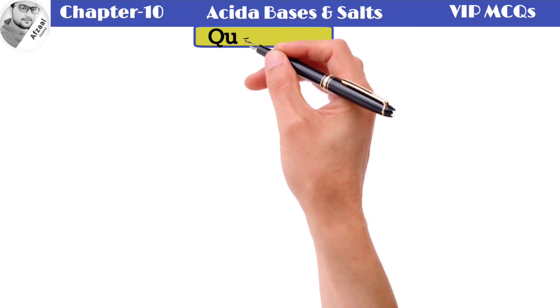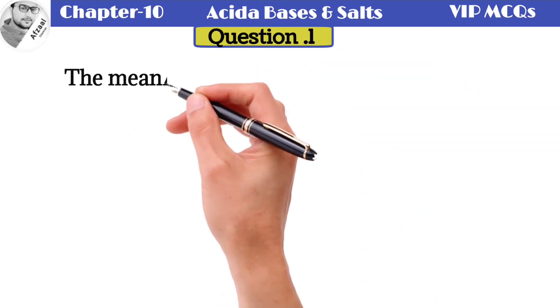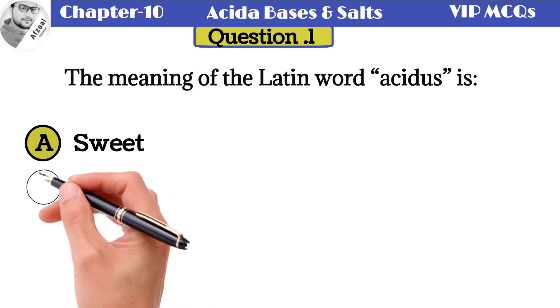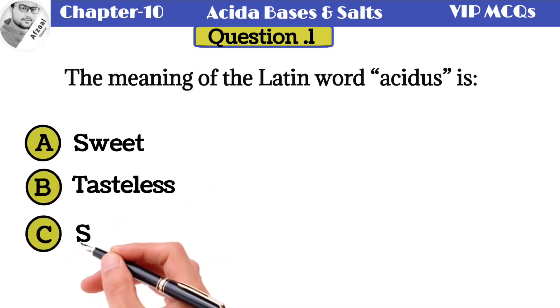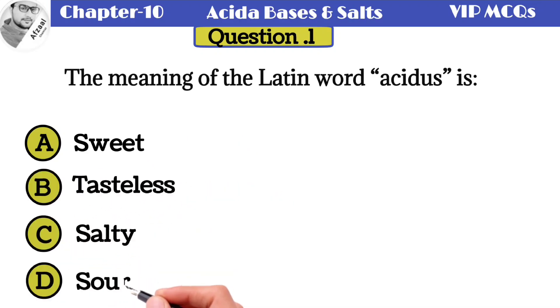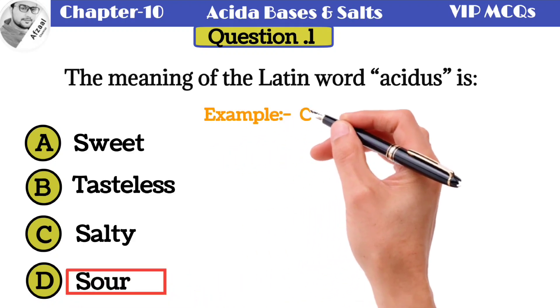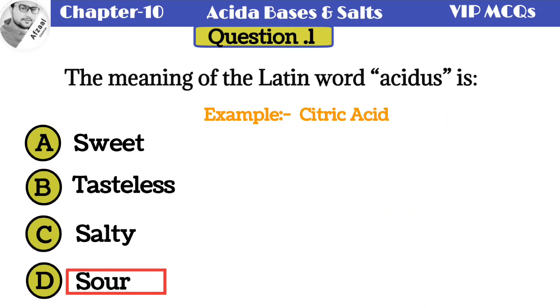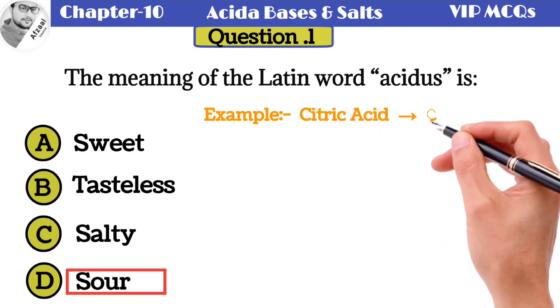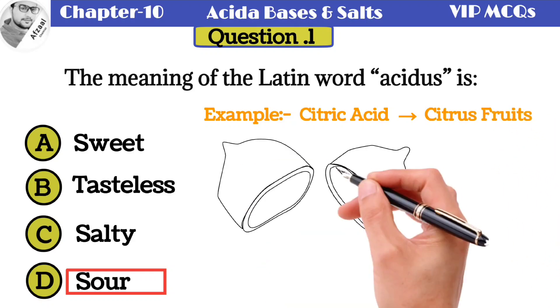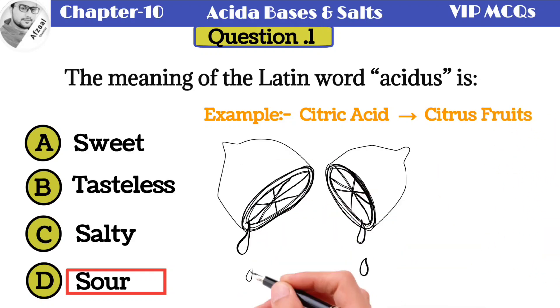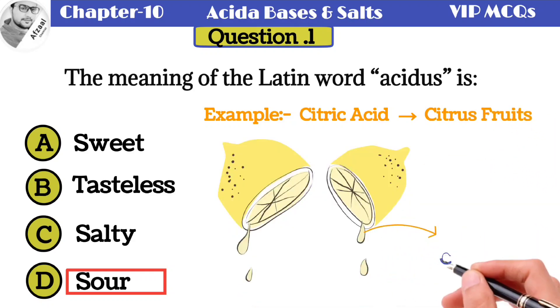Our first question is, the meaning of the Latin word acidus is: option A sweet, option B tasteless, option C salty, option D sour. The correct option is D, sour. One example of an acid that has a sour taste is citric acid. Citric acid is a natural acid found in citrus fruits such as lemons. When you taste a lemon, the sourness you experience is attributed to the presence of citric acid.